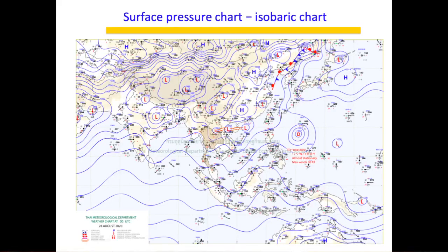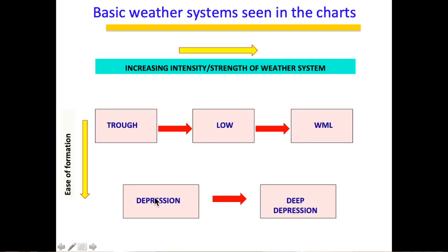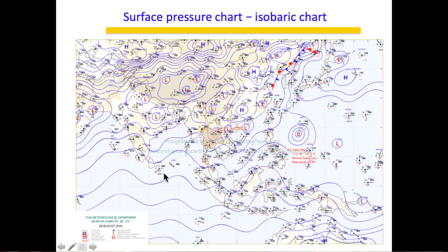On pressure charts we look for troughs and low pressures. If a low pressure becomes intense it is tagged as a well-marked low, then a depression, and keeps intensifying into a deep depression or cyclone. A trough shows a dipping pattern on the chart and is associated with bad weather, while a ridge shows an upward pattern. As these systems pinch off, they produce low pressure systems.